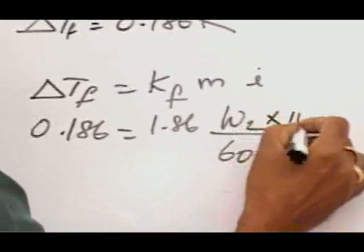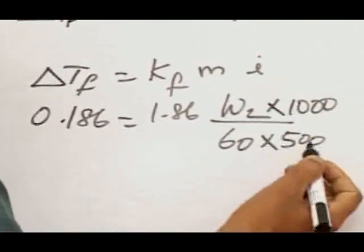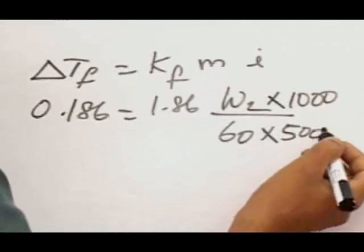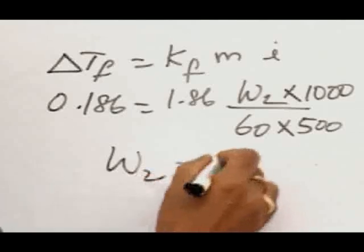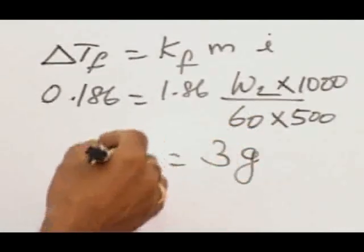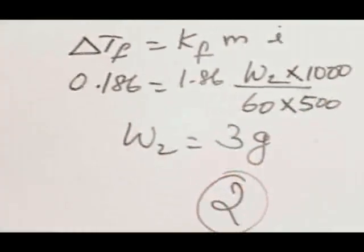unit grams, immediately you have to put 1000 grams because molality is number of moles per kilogram of the solvent. Now when we solve for W2, you get easily 3 grams, and 3 grams is given in option 2. So better select option 2, 3 grams.